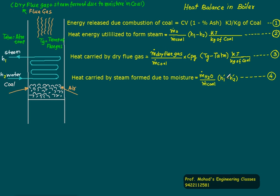Heat carried by steam. Heat carried by steam due to moisture formation is M dot H2O. We have already done this equation. Twice H2 plus O2 equal to twice H2O. Using that you can calculate mass flow rate of the mass of steam formed in the coal. H1 dash and H2 dash.